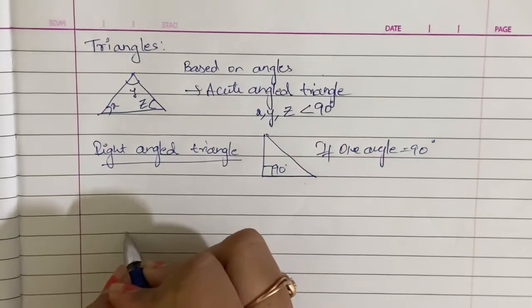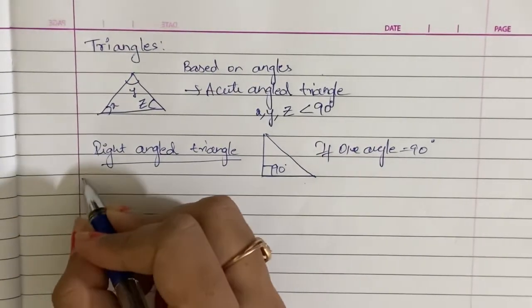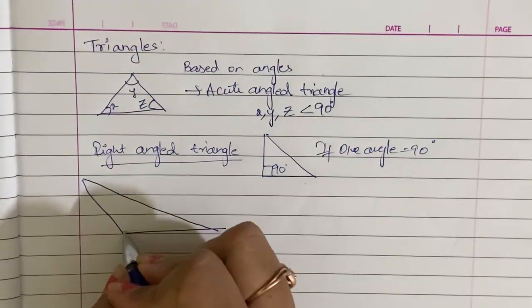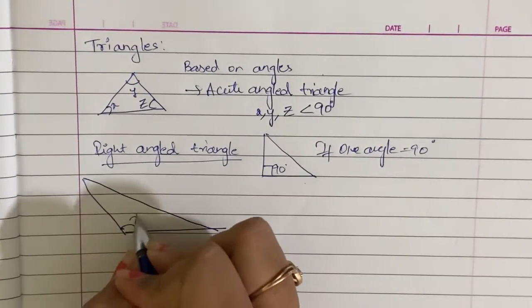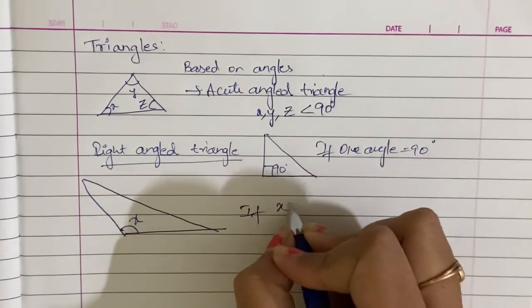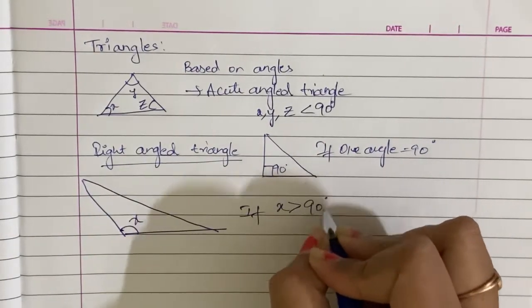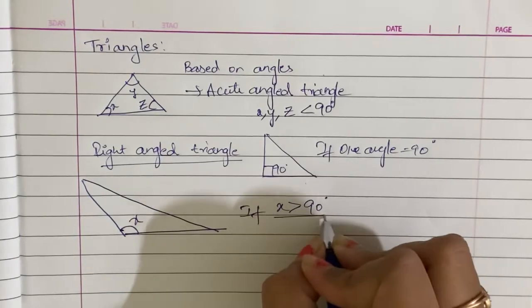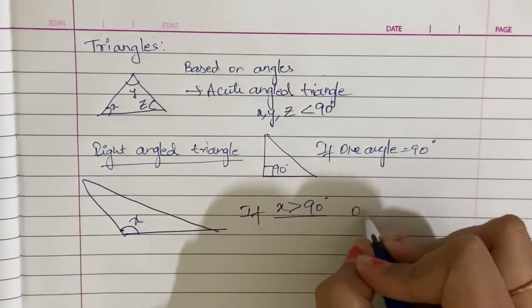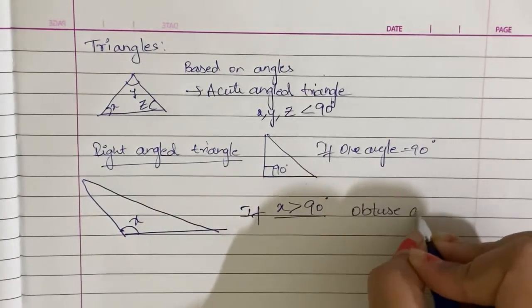Next, if one angle X is greater than or equal to 90 degrees, and one angle is greater than 90 degrees, then it is an obtuse angle triangle.